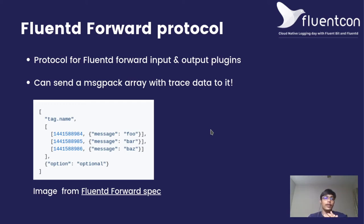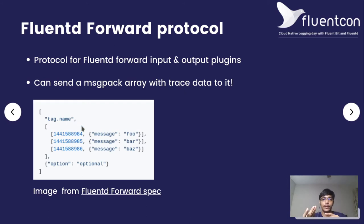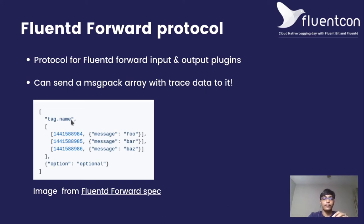We do this by making use of the Fluent forward plugin's input and output plugins, which follow the Fluentd forward protocol. This protocol defines the format in which you send data to it, and if you send data as a MessagePack array in this specific format, it will recognize, parse, and send it to the output plugins you have configured. What we do is use Fluentd or FluentBit to collect logs as well as traces. We reserve a special tag name called `data.span` to denote that this is a span, so parse it accordingly. This allows us to tell the OpenTelemetry collector that logs need to be routed to the logs pipeline and spans need to be routed to the traces pipeline.